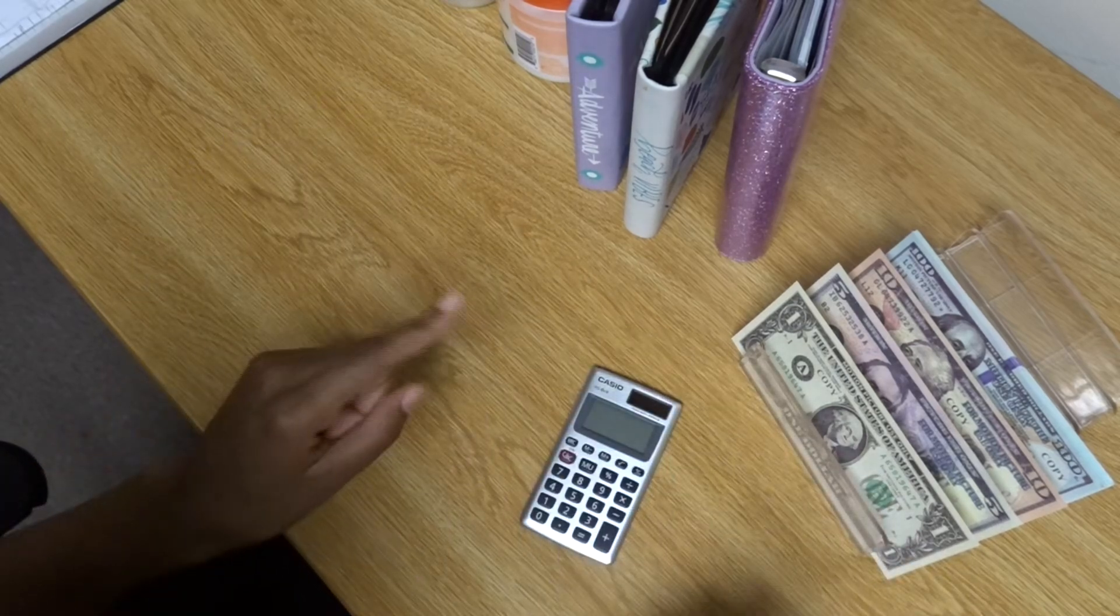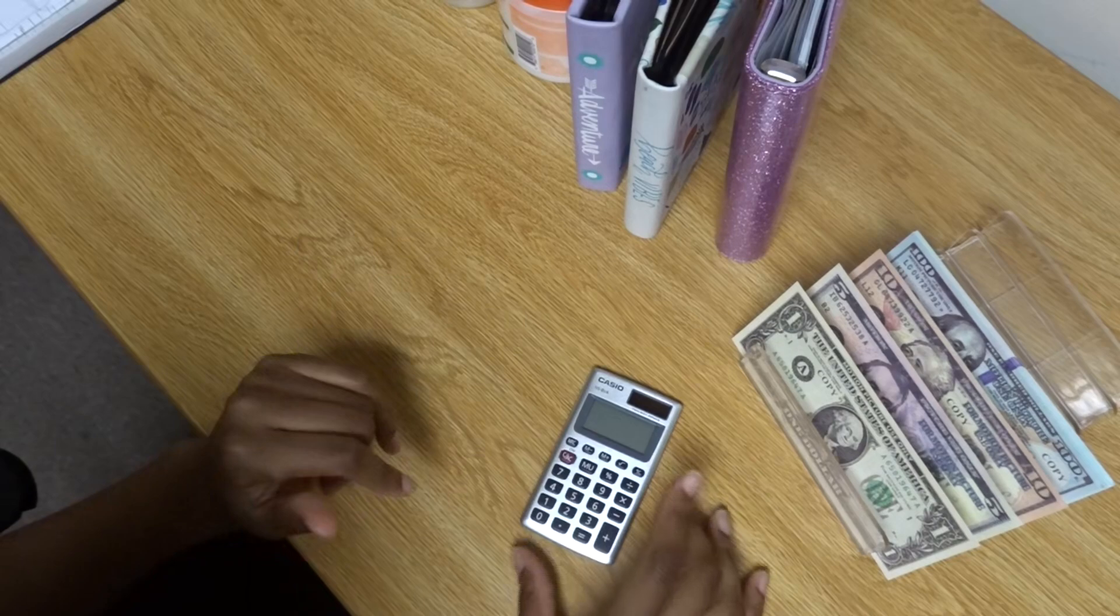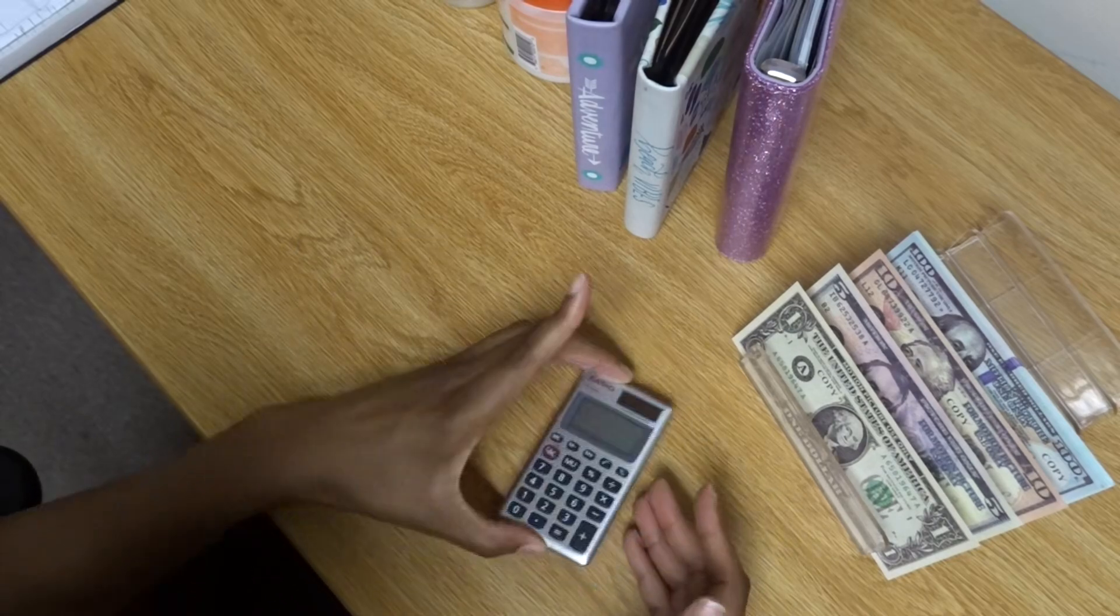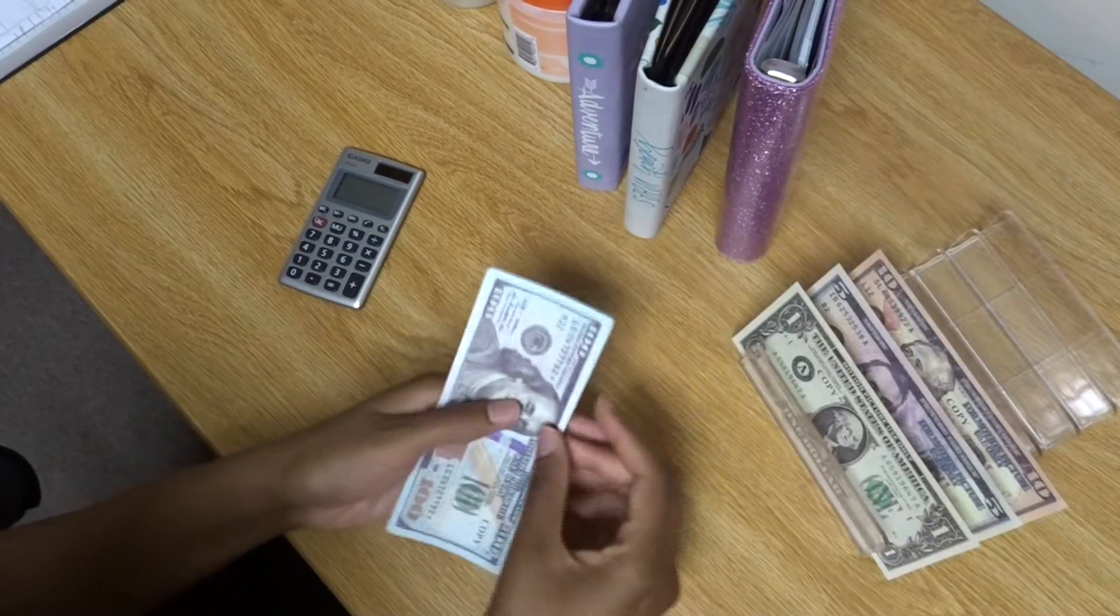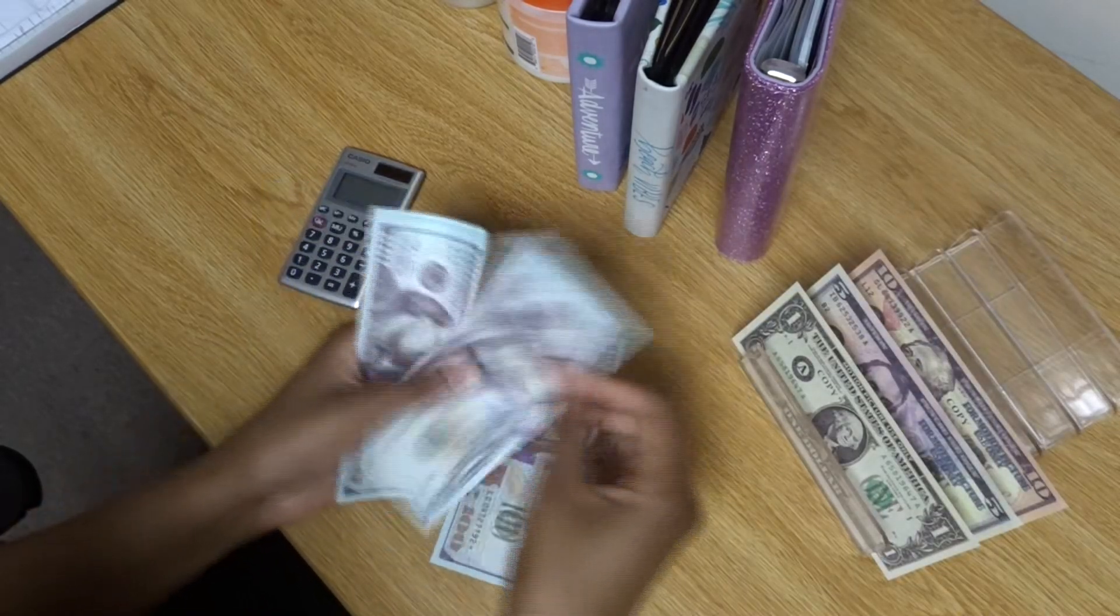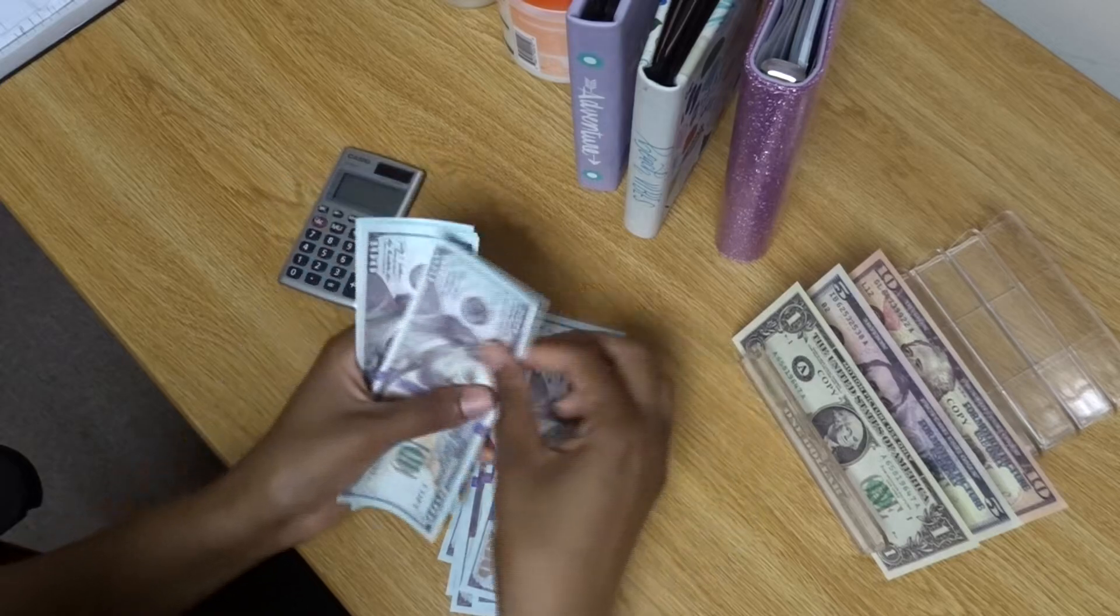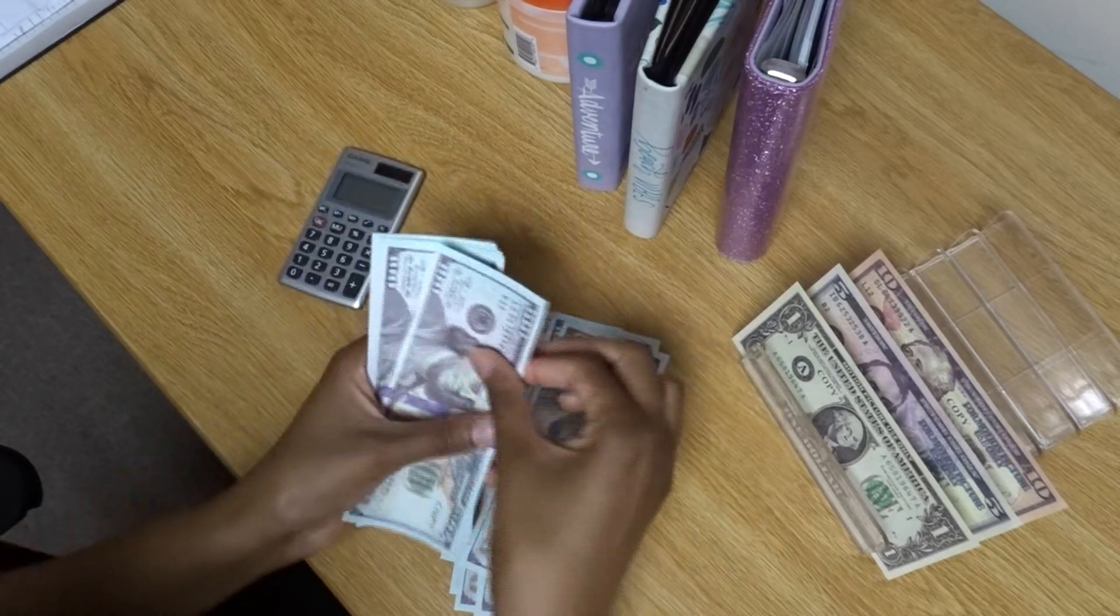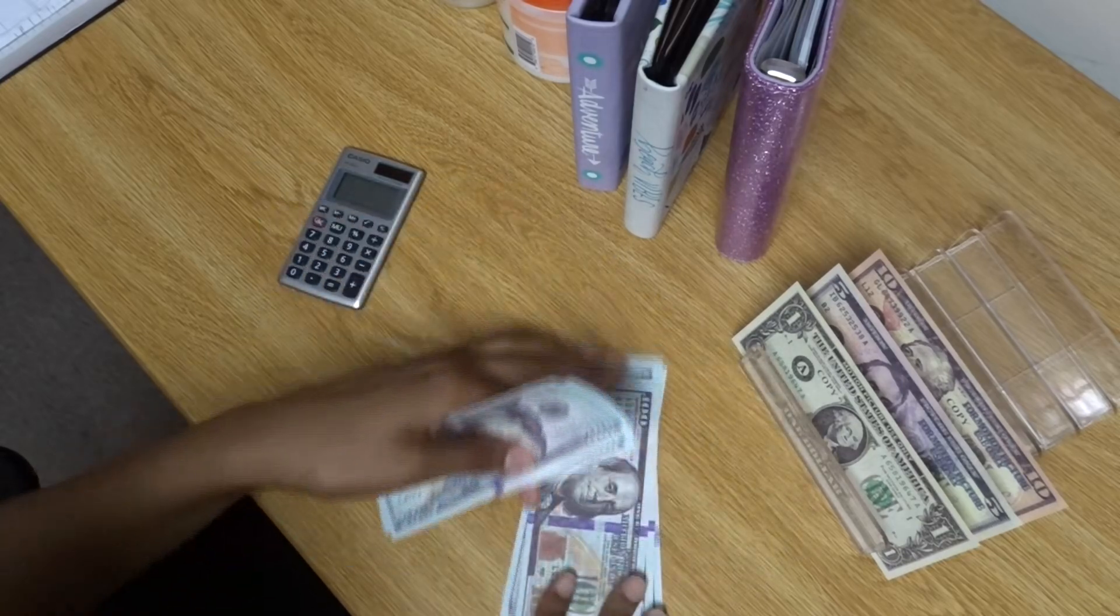Alright, so let's jump right into the counting and then I will let you guys go. So I'm going to move my tiny calculator that turned itself off. We'll start with the hundreds. I have $100, $200, $300, $400, $500, $600, $700, $800, $900, $1,000. Nice and neat.